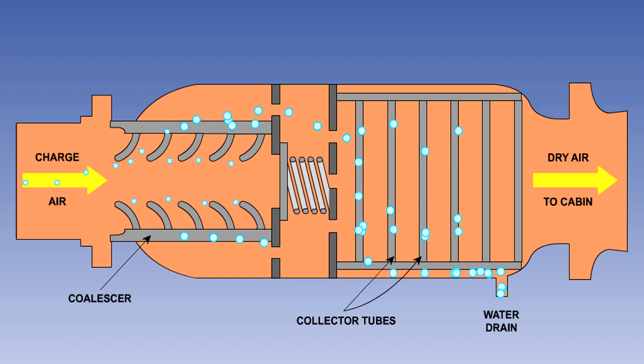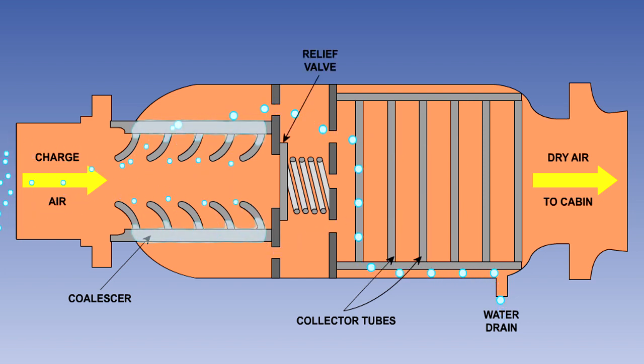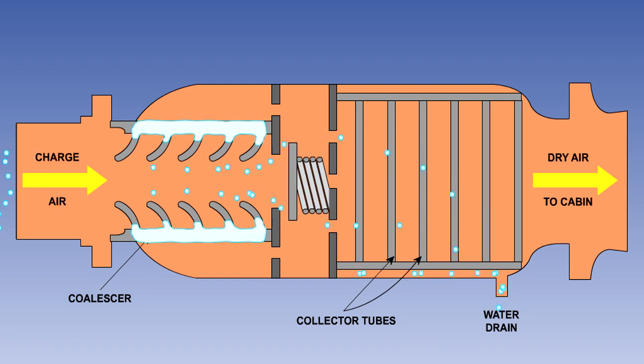The centrifugal force throws the water drops outward. When they strike the collector tubes, they run down to the bottom of the case, and exit via the water drain. The relief valve will open to safeguard the air flow to the cabin, should the coalescer become blocked with ice or debris.